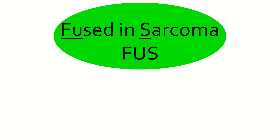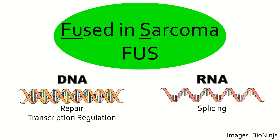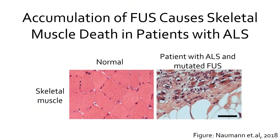FUS is a ubiquitously expressed, primarily nuclear protein involved in DNA repair, transcription regulation, RNA splicing, and RNA nuclear export. Examinations done on the spine of patients who have died from ALS reveal abnormal amounts of aggregated FUS. Due to this finding, significant resources have been directed towards understanding how FUS is regulated in the cell and what goes wrong in patients who develop ALS.